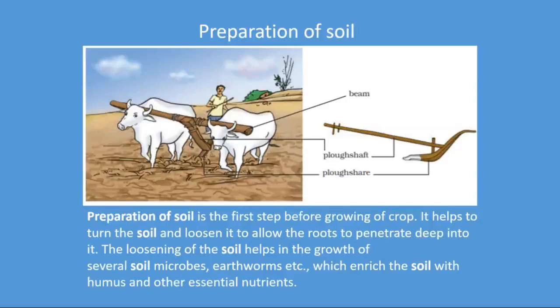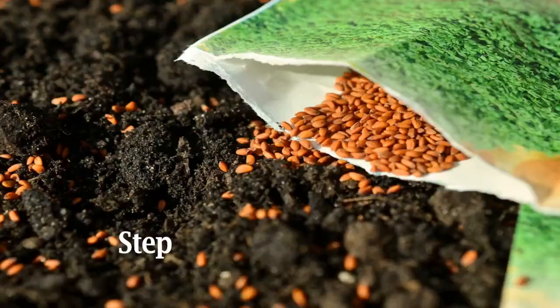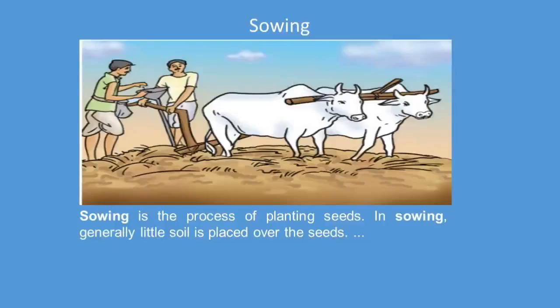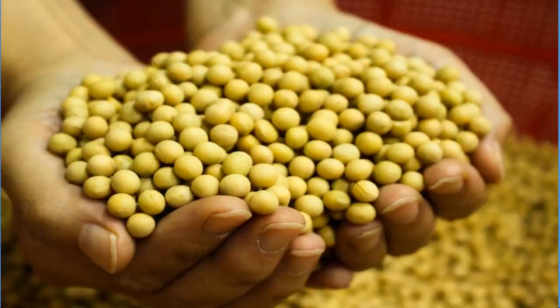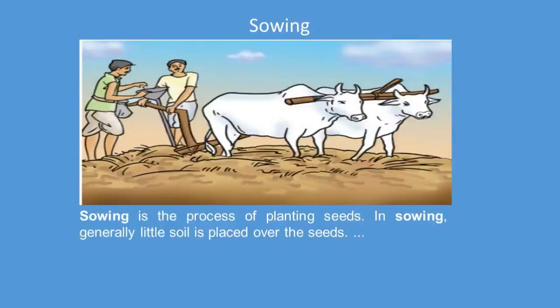After preparing the soil, the next step is sowing the seeds. Sowing is the process of planting seeds. There is a pattern in planting seeds that depends on the crop. Some seeds are to be placed deep into the soil, and some are placed just on the surface.